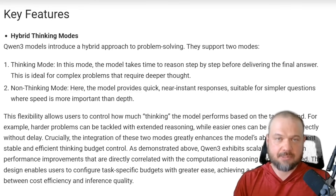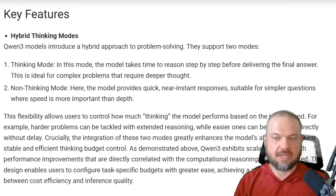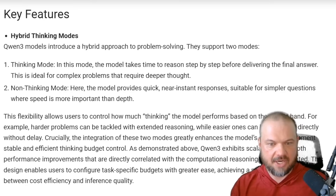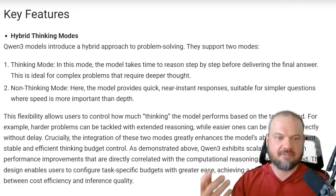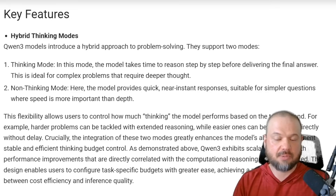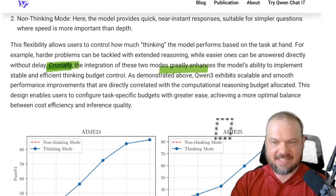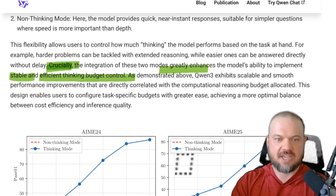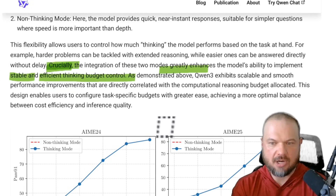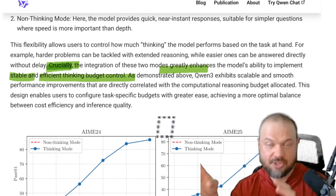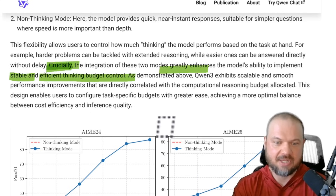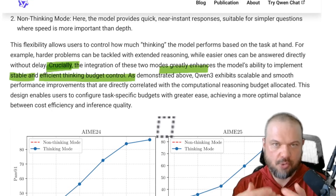Key feature number one: it supports both thinking and non-thinking modes. The thinking mode is sort of a reasoning model — thinking through everything before putting out the final answer — and the non-thinking mode where the model provides quick, near-instant responses. One thing they note is that integrating these two modes greatly enhances the model's ability to implement stable and efficient thinking budget control, so the model can expend more tokens on a difficult problem or scale back to answer quickly without thinking.